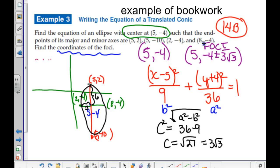They're on the major axis, so they're up and down. We have 5, negative 4 is the center. They're on the major axis, so they're going up and down, which is Y. So it should be 5, negative 4, plus or minus 3 square roots of 3 for the foci.